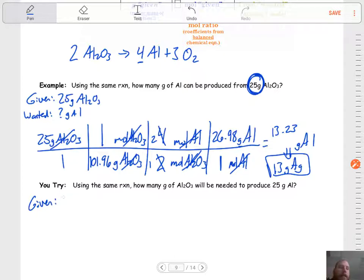All right, given 25 grams of aluminum, wanted, I'm trying to get two grams of aluminum oxide. You might think, well, this is going to be the same as the problem before, but it's not. Okay, we cannot compare grams of one substance to grams of another because each substance has a different molar mass. So just work it out.